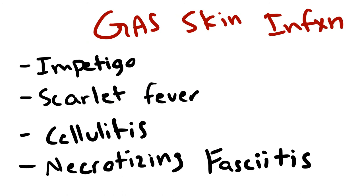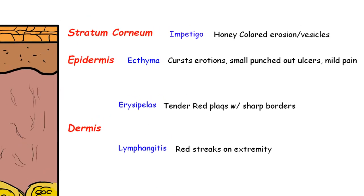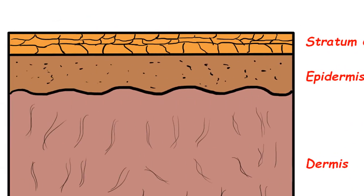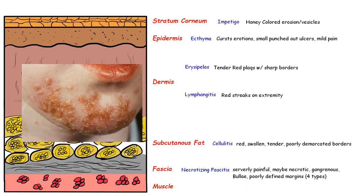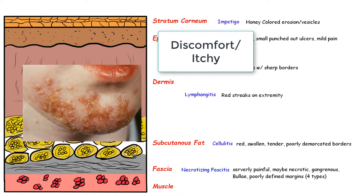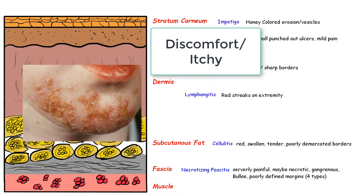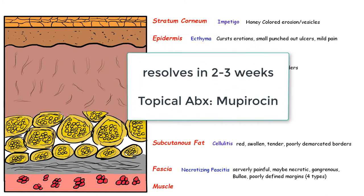GAS can also cause a number of skin infections ranging from impetigo, scarlet fever, and cellulitis to necrotizing fasciitis. GAS causes non-bullous impetigo, a superficial skin infection common in kids. It presents as a crusty honey-colored lesion which is really just pus. It's usually not associated with fever, can appear anywhere on the body but mainly the face, and may present with discomfort or itchiness. It resolves in two to three weeks with topical antibiotics like mupirocin.